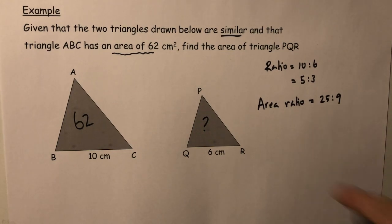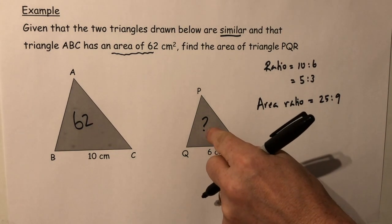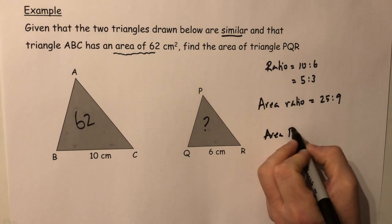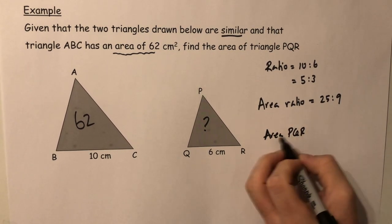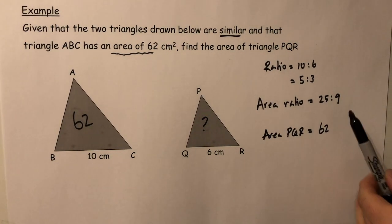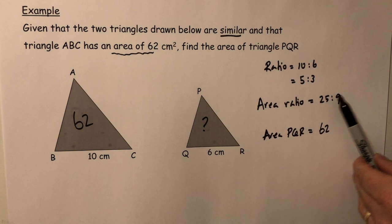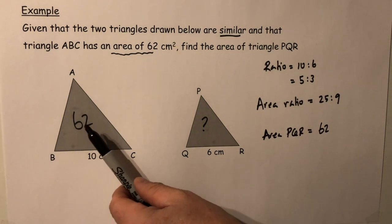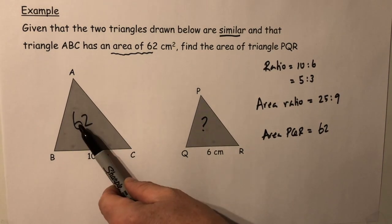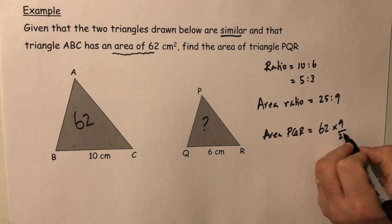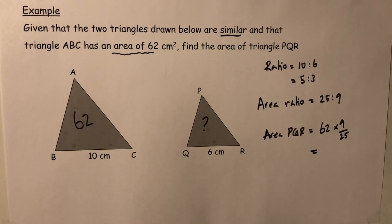Therefore, in order to find the area of this triangle, area of PQR, it's related to the 62, however it's either multiplied by 25 over 9 or it's multiplied by 9 over 25. Now because this triangle is smaller than this triangle, I need to multiply by 9 over 25. If I was to do it the other way around, I'd end up with a larger area, which is incorrect.